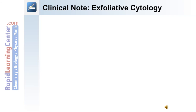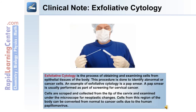The following is a clinical note on exfoliative cytology. Exfoliative cytology is the process of obtaining and examining cells from epithelial tissues of the body, done to identify abnormal or cancer cells. An example is a pap smear, usually performed as part of screening for cervical cancer. Cells are scraped and collected from the tip of the cervix and examined under the microscope for neoplastic changes. Cells from this region can be converted from normal to cancer cells due to human papillomavirus.